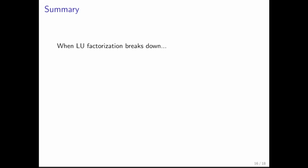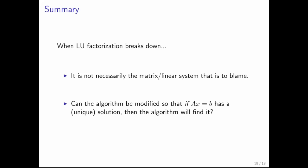So what do we notice? When LU factorization breaks down, it is not necessarily the matrix or the linear system that is to blame. And the question now becomes, can the algorithm be modified so that if Ax equals B has a unique solution, then the algorithm will actually find it? And that's what we're going to look at in the next few units.